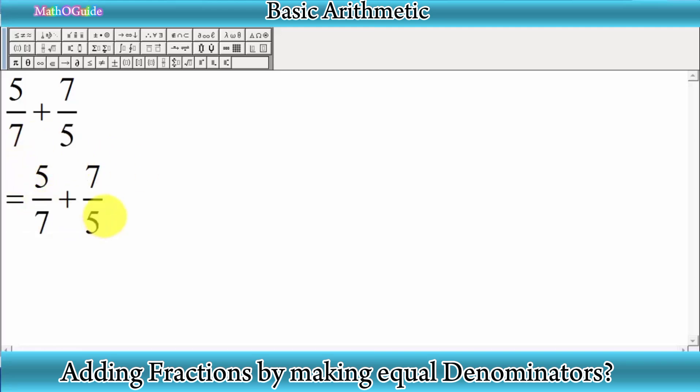and the second by 5/5, both in the denominator and numerator. So here you can see, 5 times 5 equals 25, and 7 times 5 equals 35. Also, 7 times 7 equals 49, and 5 times 7